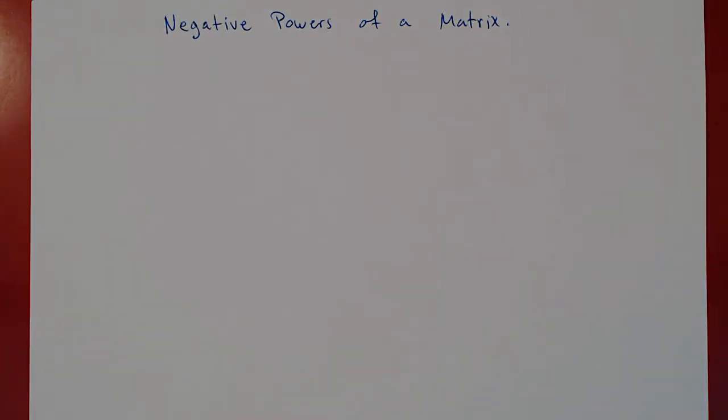Okay, so if you remember, we've discussed taking positive integer powers of a square matrix, right? A cubed would be A times A times A, and so on.